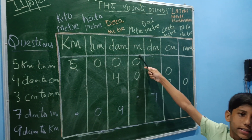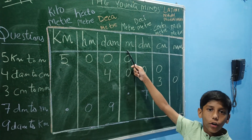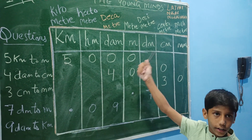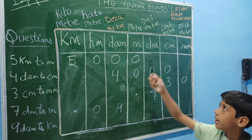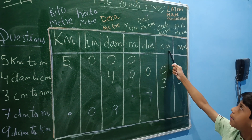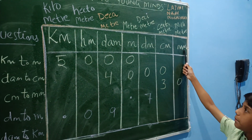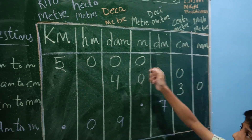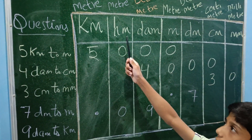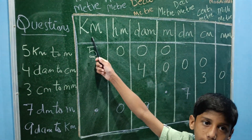Meter is the standard unit of length and the other units are decimeter, centimeter, millimeter, hectometer, and kilometer.